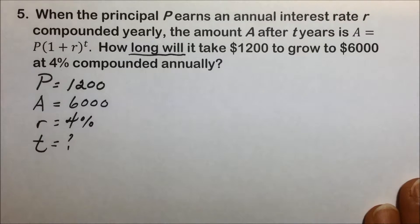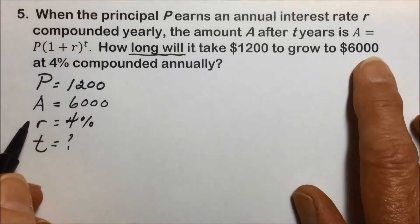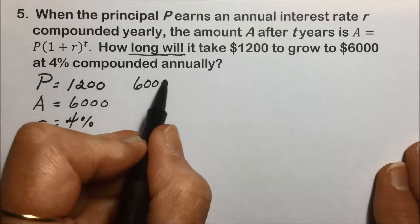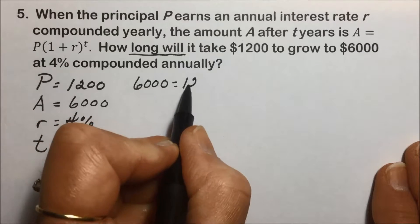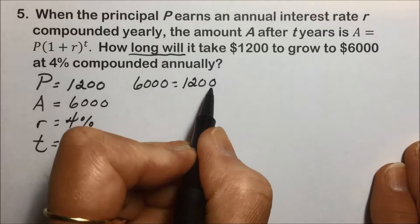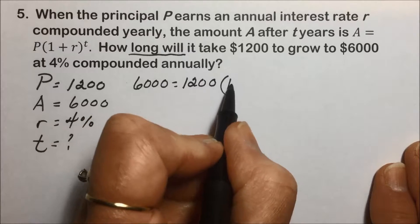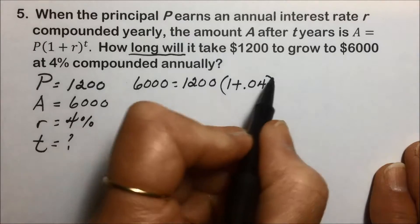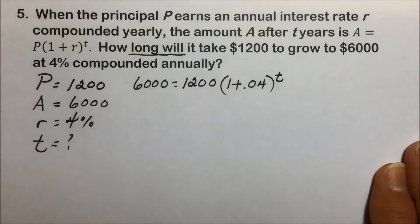So plugging those values into the formula, we will have A, we know would be 6,000, is equal to P, the principal amount, 1,200 times 1 plus the interest rate, and I'm writing that as a decimal, raised to the t power.